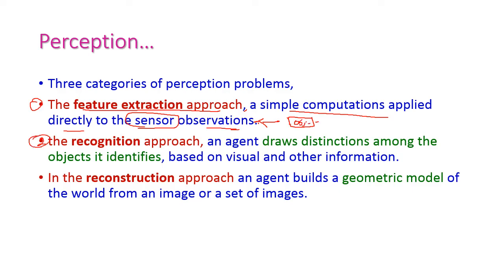The second approach is the recognition approach. This is somewhat advanced from the feature approach. Here the agent draws distinctions among the objects it identifies. If more than one object is in the environment, it draws lines on the objects so that it can easily differentiate one object from another. This is called object recognition.